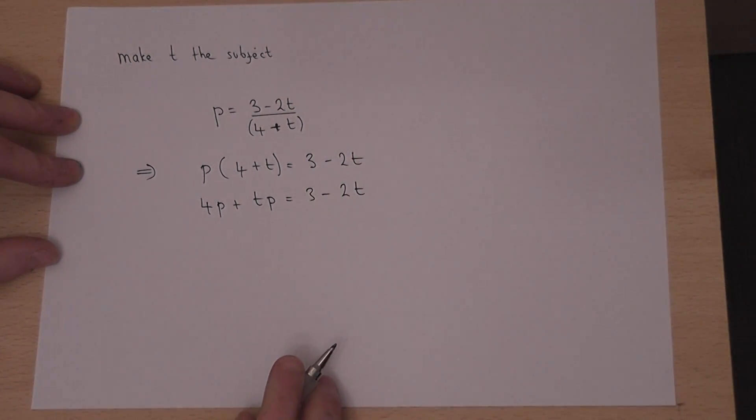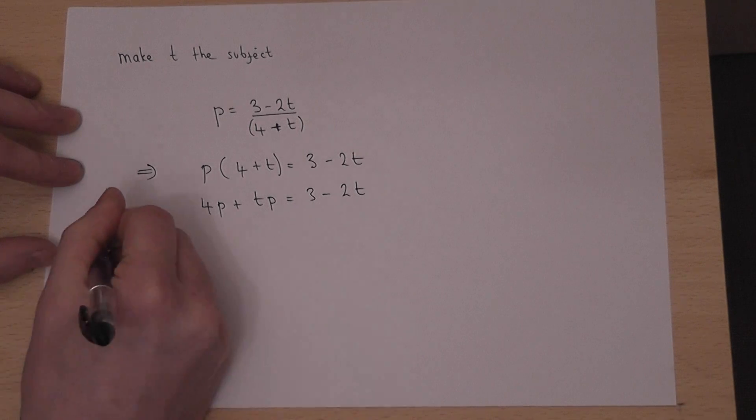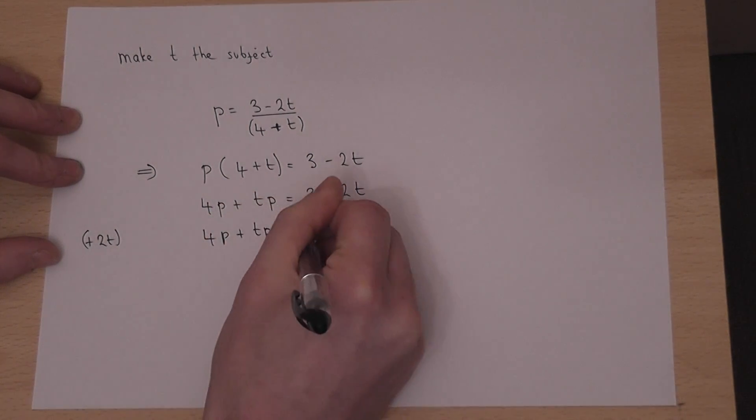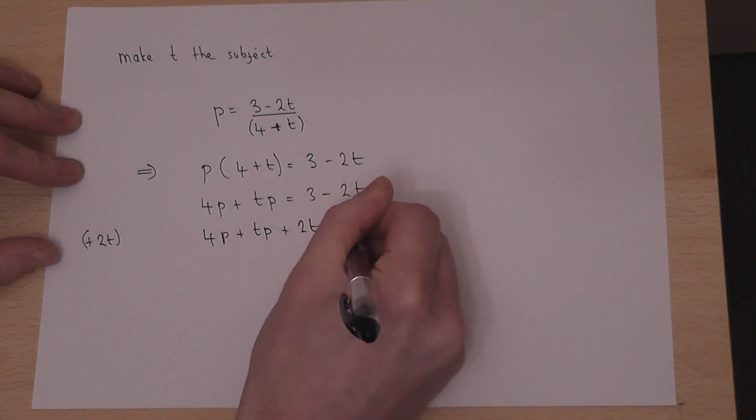And I want to get all the t's to one side, so if I add 2t, 4p plus tp plus 2t equals 3.